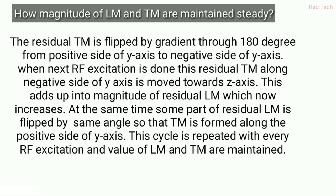Again, the same short flip angle is applied, and TM is formed along the positive side of the axis. The same cycle is repeated again and again with each RF excitation, and both values of LM and TM are maintained. The residual transverse magnetization passes through the 180-degree gradient coil, which diverts it from positive to negative side, and then the next RF excitation flips it from the negative side of the axis back toward the Z-axis.